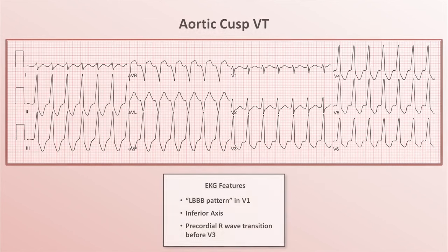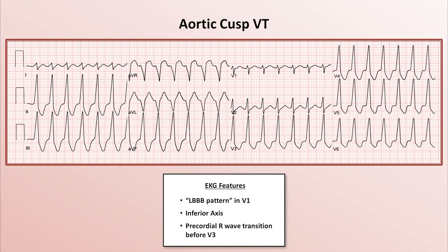Comparing that to an aortic cusp VT: the V1 left bundle branch pattern isn't quite as pronounced, and that's partially because the precordial R-wave transition is much earlier — happening sometime between V1 and V2. You might wonder: if the LVOT is part of the LV, why do LVOT VTs have a left bundle branch block pattern that would otherwise suggest they come from the right ventricle? The extremely short answer is that the heart is a complex three-dimensional anatomic structure, resulting in some empiric observations that feel counterintuitive. So it is an exception to the general rule that a predominantly negative QRS complex in V1 suggests a right ventricular origin.